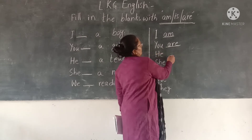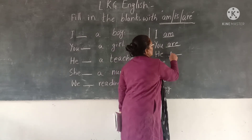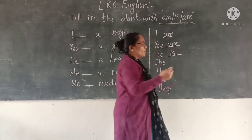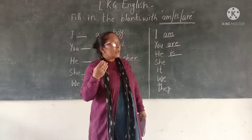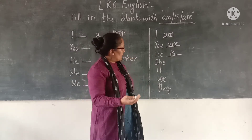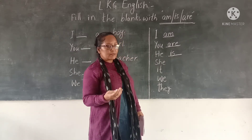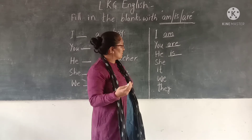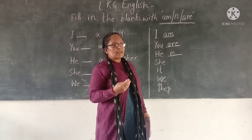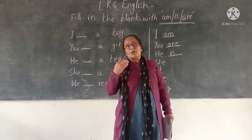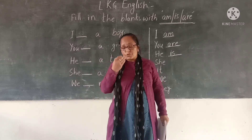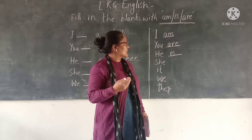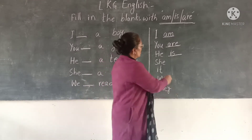He. After he, we use IS. He is a boy. He is a player. He is a doctor. He is a teacher. We should write IS after he.